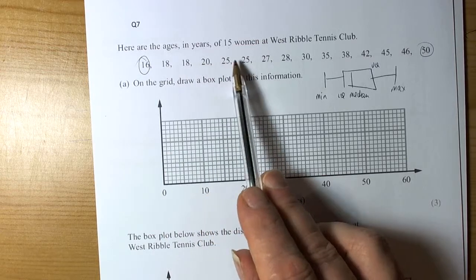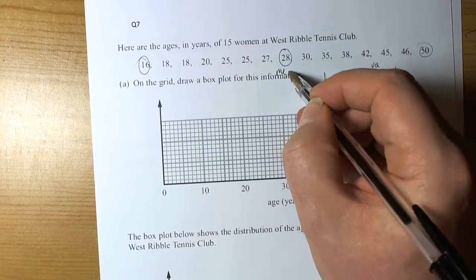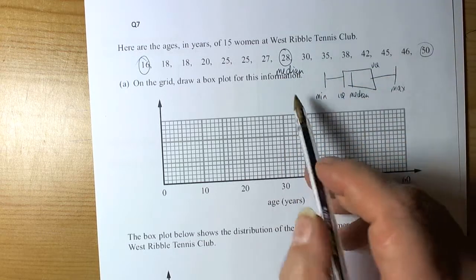So 1, 2, 3, 4, 5, 6, 7, 8. So that's going to be the median age of the women.